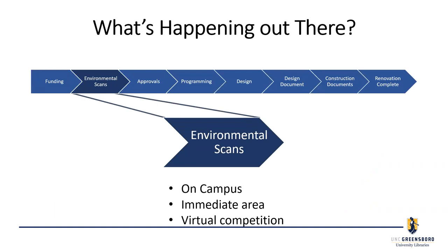The next piece is recognizing what's happening in the environment — an environmental scan. On campus, there are changes to what happens in other spaces; when the quads were built they included common rooms that mirrored our study rooms. We're connected to the student union and between the student union and the dining hall, so what they do with their space could impact what we end up doing. Knowing what's going on in the immediate area from a business perspective is also important.